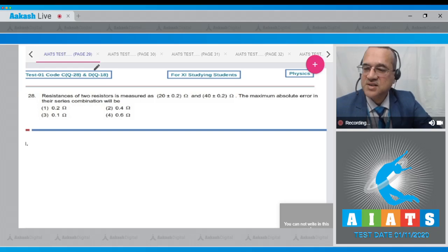Question number 28 says that the resistance of two resistors is measured as 20 plus minus 0.2 ohm and 40 plus minus 0.2 ohm. The maximum absolute error in their series combination will be...